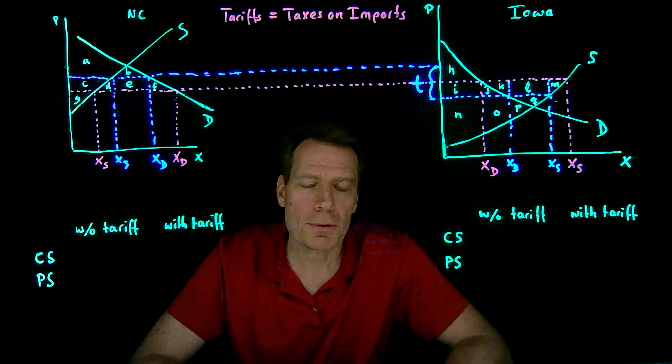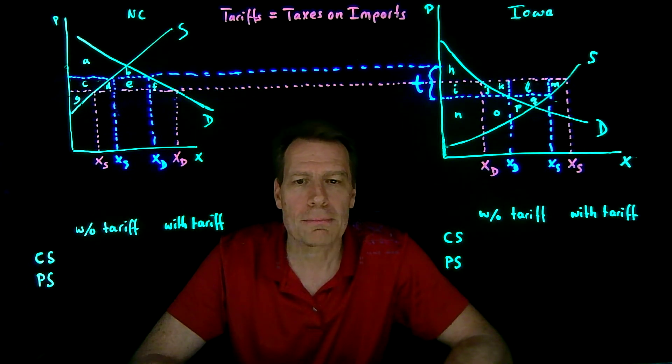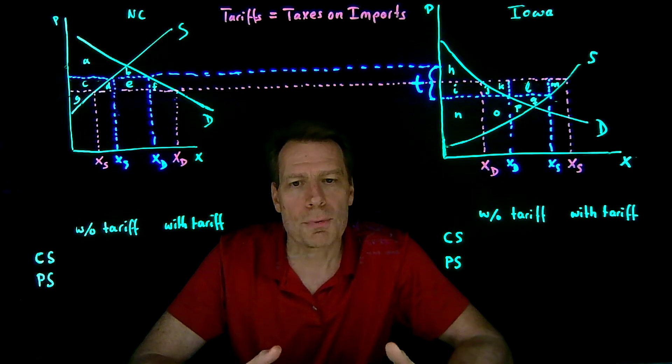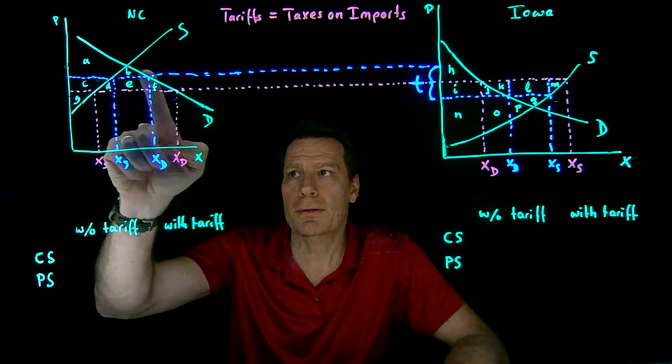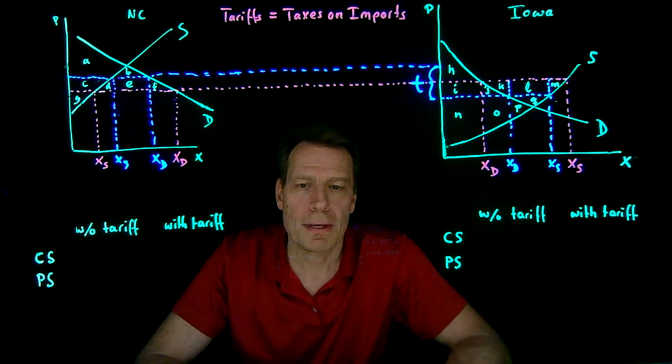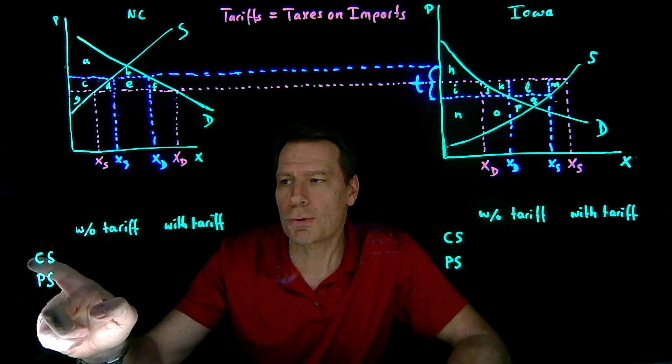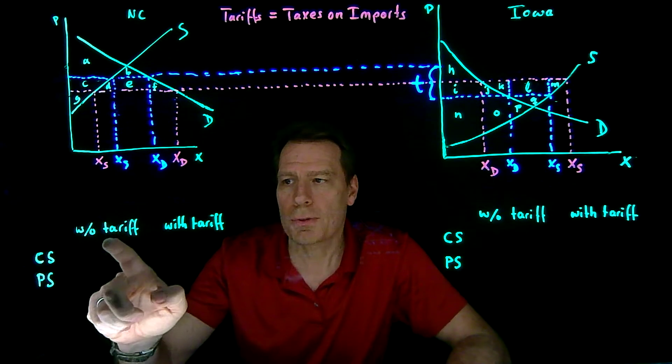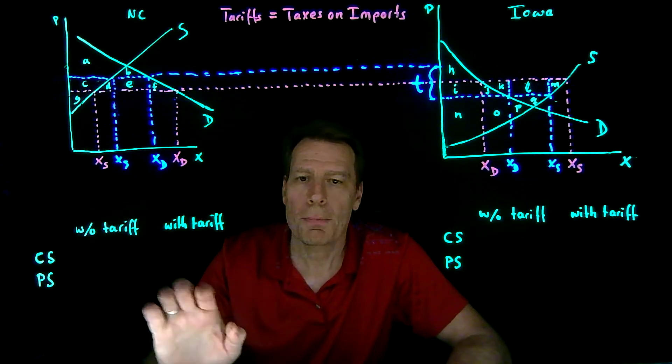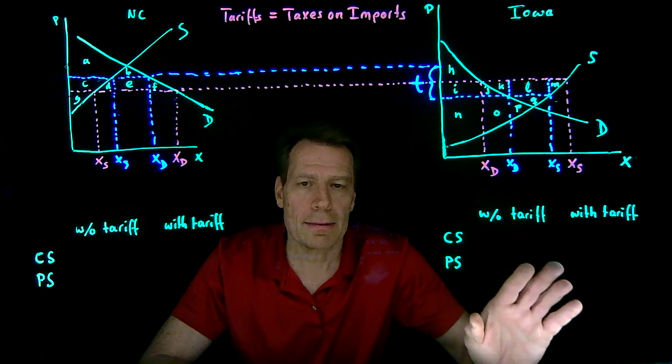And that's a little bit harder to see in this picture because it's gotten pretty complicated. So what I've done is I've labeled these areas with lowercase letters, and we're just gonna add up what amounts to consumer surplus and producer surplus without and with the tariff, both in North Carolina and in Iowa.